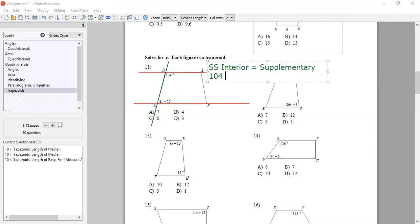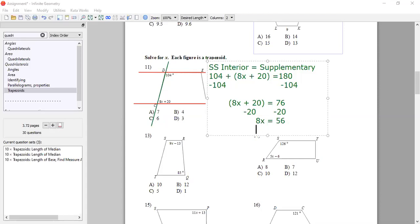That tells you 104 plus 8x plus 20 equals 180 degrees. Subtract that 104 from both sides. So 8x plus 20 equals 76. The parentheses are meaningless now, so we'll drop those. So minus 20 from both sides. 8x equals 56. Divide both sides by 8. And x equals 7.